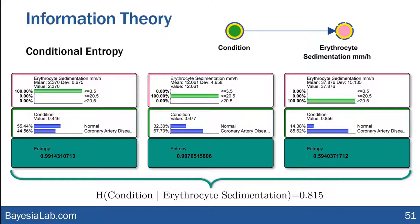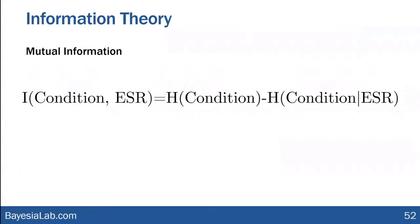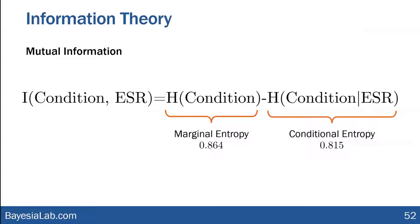I realize the naming is a bit challenging — I'm talking about conditional entropy of a variable named 'condition,' and erythrocyte sedimentation is a very long word. In my next webinar I'll pick something slightly easier to say. Where do I go with this conditional entropy? Now that we have the marginal entropy and the conditional entropy with their numerical values — that is the definition of mutual information.